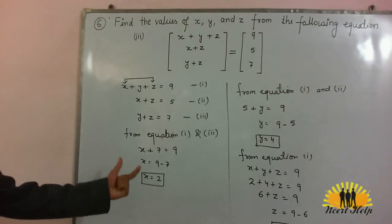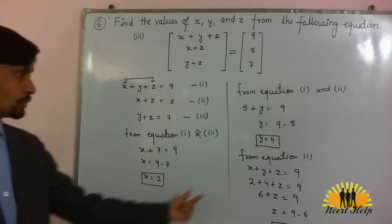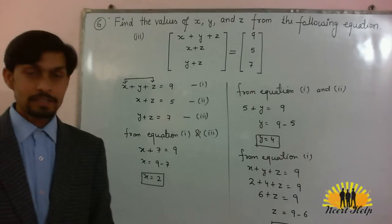So the final answer, as you can see, it is in the boxes. The value of x is 2, value of y is 4 and value of z is 3.